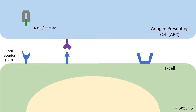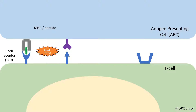T cells are activated by a process that requires three sequential signals. The first signal begins when the T cell receptor interacts with the MHC-peptide complex presented by an antigen-presenting cell. Once a threshold number of T cell receptors are occupied, signal 2 is initiated.